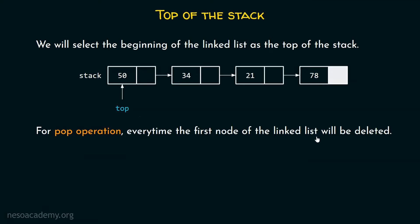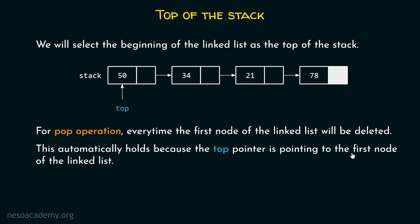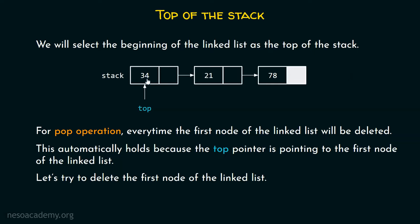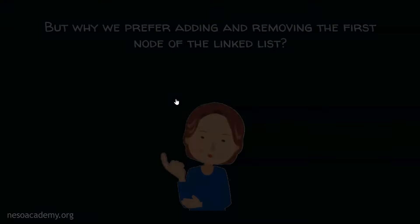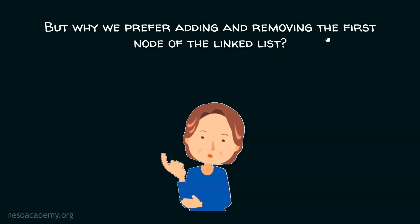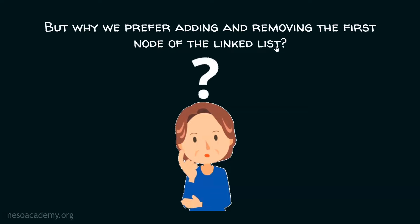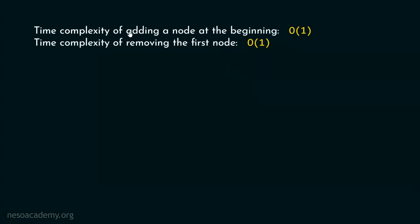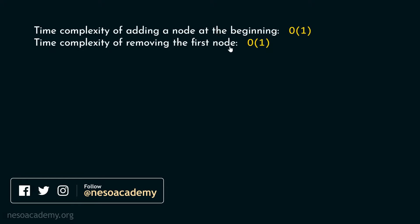For pop operation, every time the first node of the linked list will be deleted. This automatically holds because the top pointer is pointing to the first node. Let's delete this node — after deleting, the top pointer must point to the next node. The time complexity of adding a node at the beginning is O(1), and the time complexity of removing the first node is also O(1). These two are constant operations, and that is why they are faster.